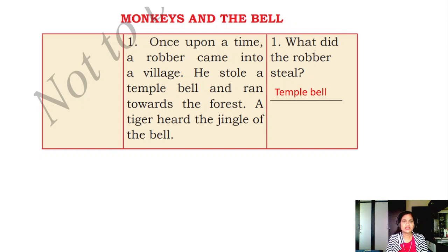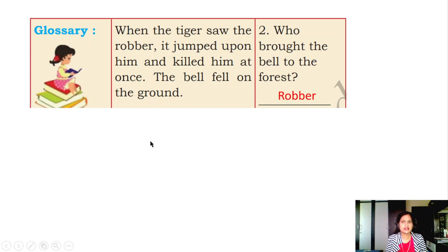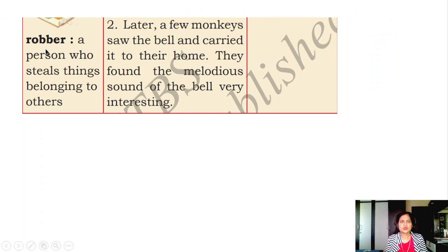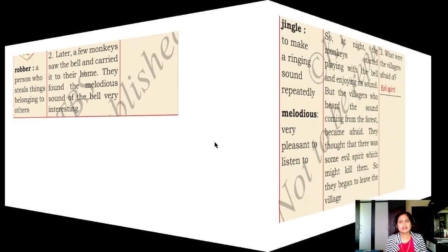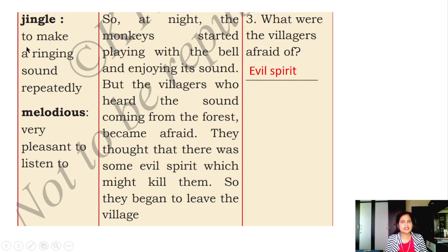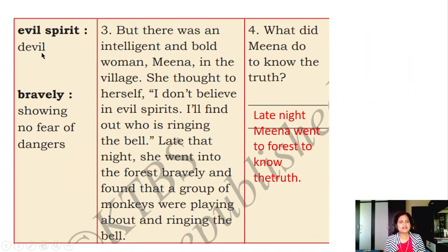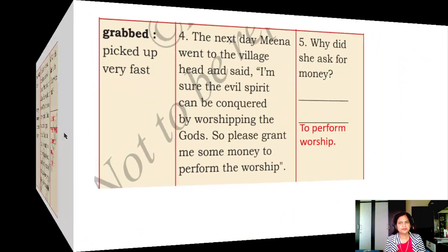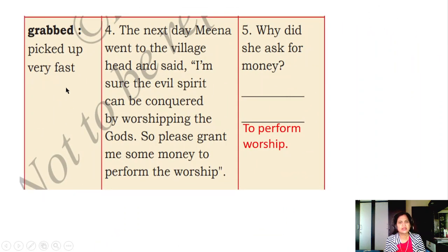Now we move to the new story: 'Monkeys and the Bell.' In this story, the monkeys and the bell are the main players. Before reading, let's look at the glossary. A robber is a person who steals things belonging to others. 'Jingle' means to make a ringing sound repeatedly. 'Melodious' means very pleasant to listen to. 'Evil spirit' means a devil. 'Bravely' means showing no fear of danger. 'Grabbed' means picked up very fast.